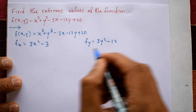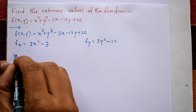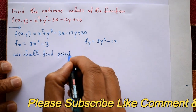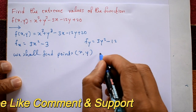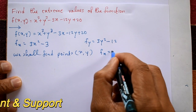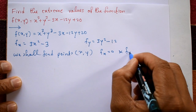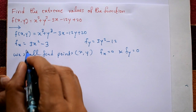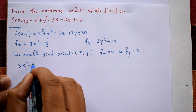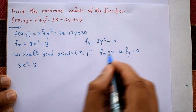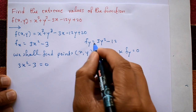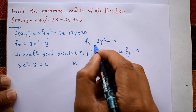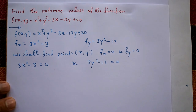Next, we find the stationary points by setting ∂f/∂x = 0 and ∂f/∂y = 0. So the first equation is 3x² - 3 = 0, and the second equation is 3y² - 12 = 0.